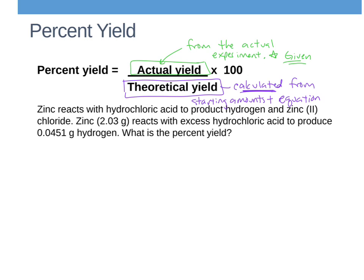So if I look at this question where it says zinc reacts with hydrochloric acid to produce hydrogen and zinc chloride. Zinc, apparently 2.03 grams, reacts with excess hydrochloric acid to produce 0.0451 grams of hydrogen. What is the percent yield? So what they're asking us is the percent yield, and we're saying it's the actual over the theoretical times 100. Now I already know what the actual yield is because it tells me it produced this much hydrogen. So I know that because that's given to me.